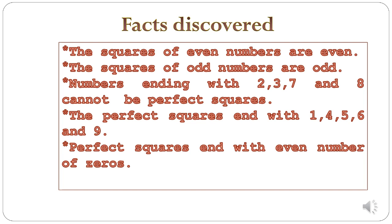Numbers ending with 2, 3, 7, and 8 cannot be perfect squares. The perfect squares end with 1, 4, 5, 6, and 9. The perfect squares end with even number of zeros if the integer taken for squaring end with zeros.